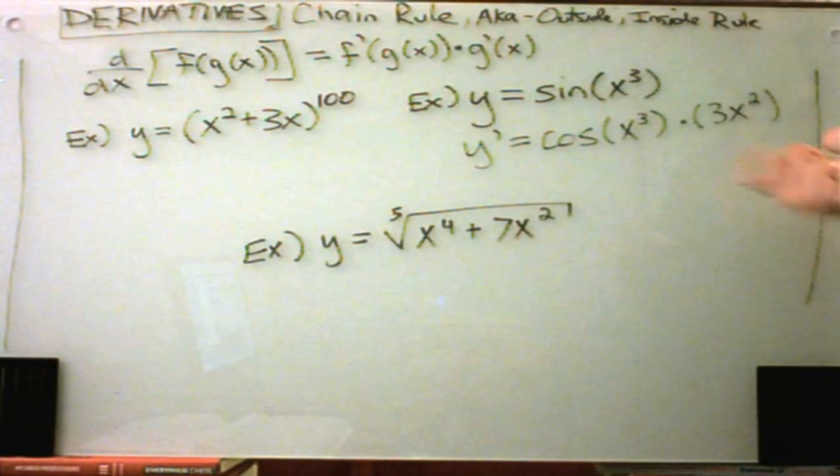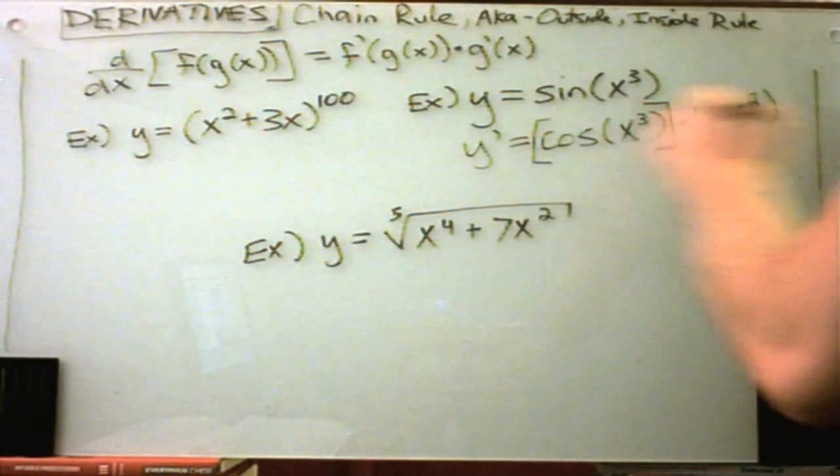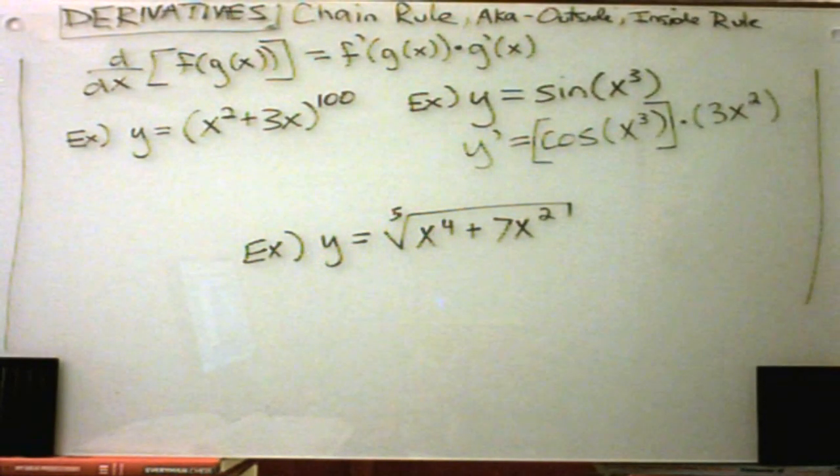And there's really not much simplification you can do here. These two things are not being multiplied. You should think about the cosine of x cubed as being one factor, and the 3x squared as being the other factor. So that's all there is to that one.